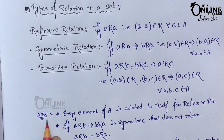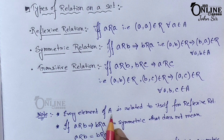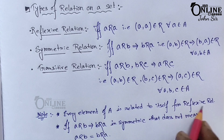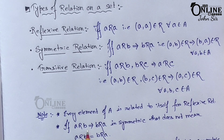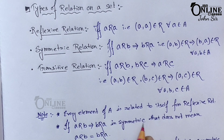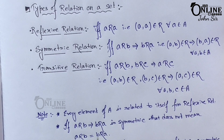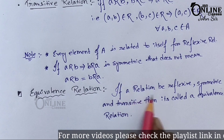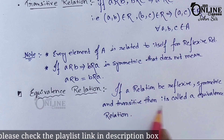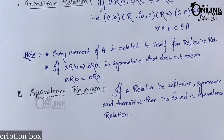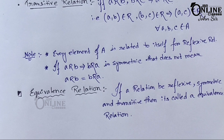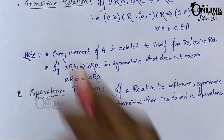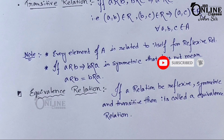Some important notes: first, every element of A is related to itself in a reflexive relation. Second, if a is related to b and b is related to a, that is symmetric — but that does not mean a related to b equals b related to a. Finally, the equivalence relation: if a relation is reflexive, symmetric, and transitive, then it is called an equivalence relation. If any one of the three conditions is not satisfied, then it is not an equivalence relation.